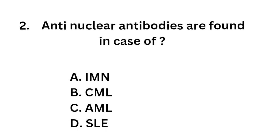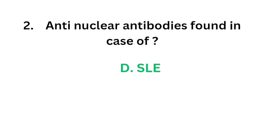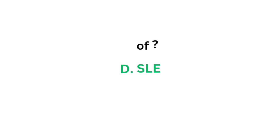Question 2. Antinuclear antibodies are found in case of: Option A, IMN (infectious mononucleosis); Option B, Chronic myeloid leukemia; Option C, Acute myeloid leukemia; Option D, Systemic lupus erythematosus. The correct answer is Option D, Systemic lupus erythematosus.